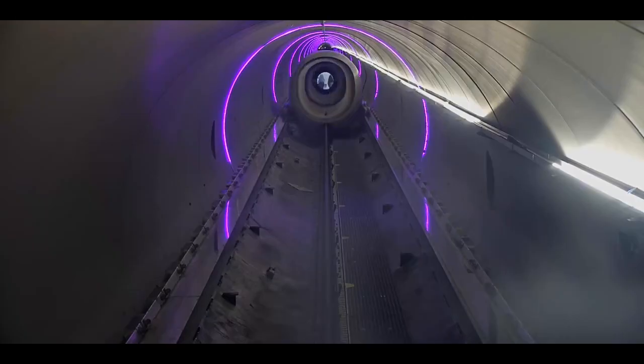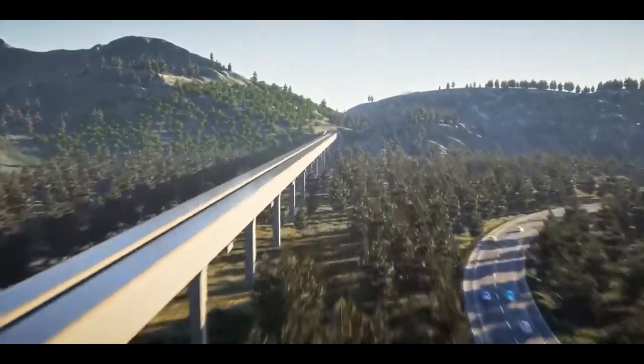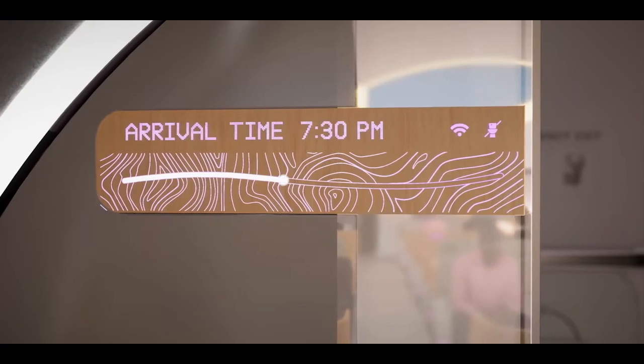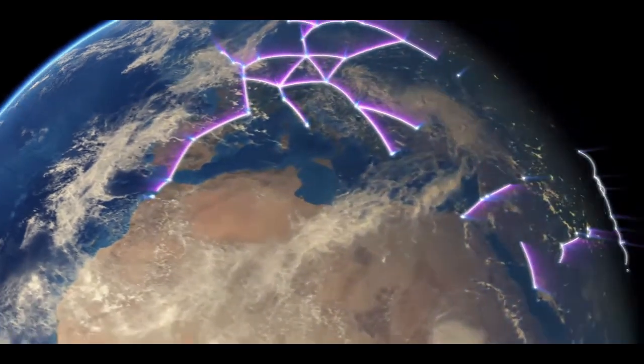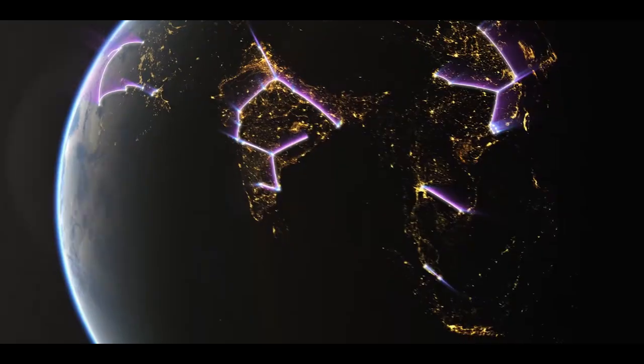Future trains capable of speeds around 500 or 600 km per hour could encompass the globe and help to reduce the effects of air travel on global warming.